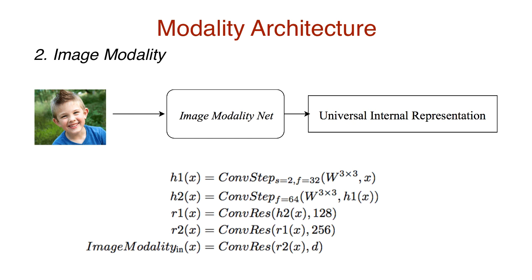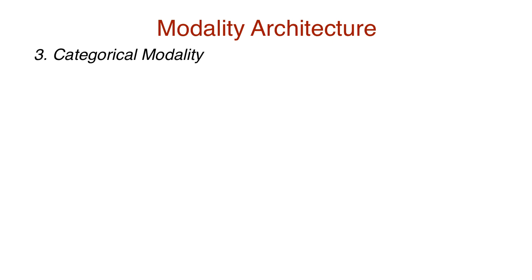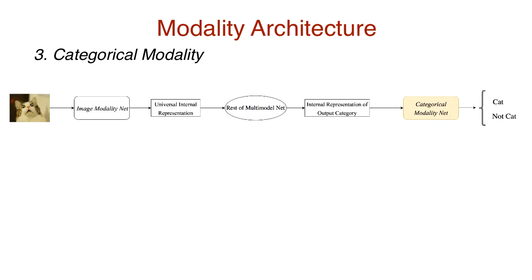This brings us to the next type of modality net, categorical modality. This is used when the input is an image or audio, and the output is a category, much like determining an input image is a dog or a cat. Or in the context of audio input, it could involve determining the type of urban noise the audio clip corresponds to: children playing, or the sound of an engine, or the sound of a jackhammer.